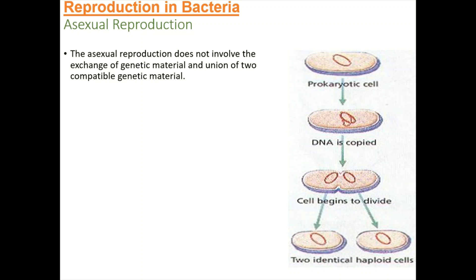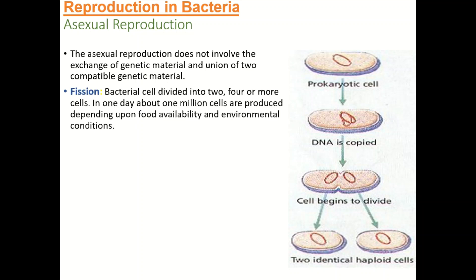Asexual reproduction takes place without the exchange of genetic material. The main type of asexual reproduction in bacteria is fission. Bacterial cells divide into two cells, four cells, or more cells. In one day, about one million cells are produced depending upon food availability and when environmental conditions are favorable. Binary fission is a form of asexual reproduction.